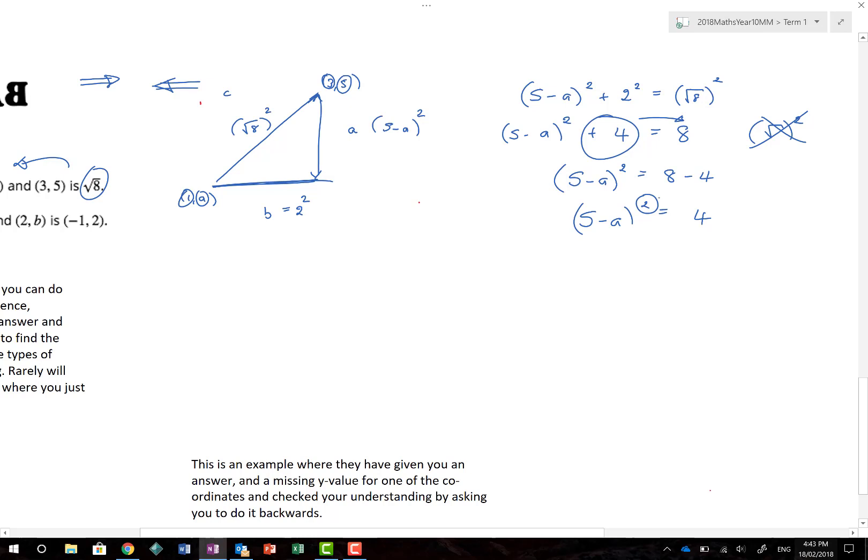Now, how do I get rid of a squared? Well, I can square root both sides. So, that gives me 5 minus A is equal to the square root of 4. Now, if you remember, when we square root something, we should write a plus and a minus value in front, because there are two possible values. Remember, 2 times 2 is 4, as is minus 2 times minus 2 equals 4.